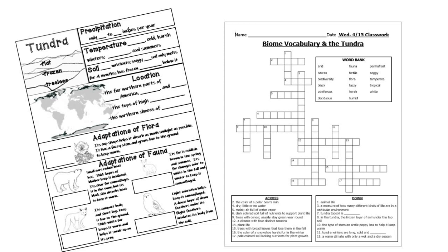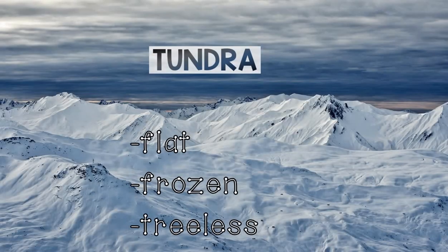Today we're going to take a look at the biome called the tundra. For today's lesson you'll need a copy of the notes on the tundra as well as a copy of a crossword puzzle that you'll complete for practice at the end of this video. For each of the biomes that we'll study, we'll look at the same characteristics: a quick description of what that biome looks like, how much rainfall or snow it gets, the temperature and seasons, the condition of the soil, where it's located in the world, and some adaptations of the plant life and animal life that live in it.